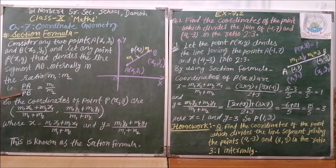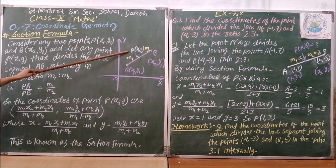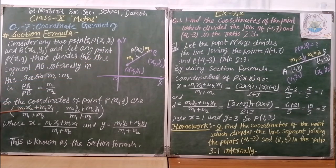But if you want to find coordinate of P, then we will use section formula that is M1x2 plus M2x1 upon M1 plus M2 and M1y2 plus M2y1 upon M1 plus M2.